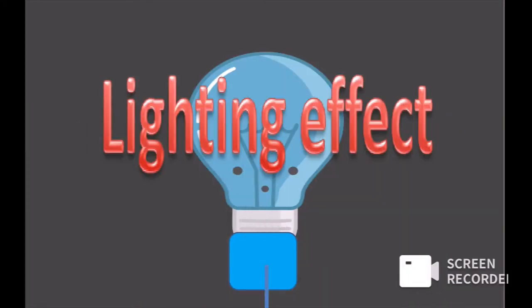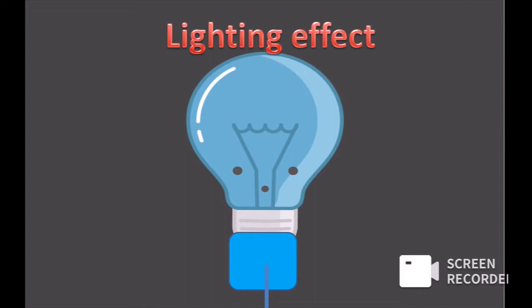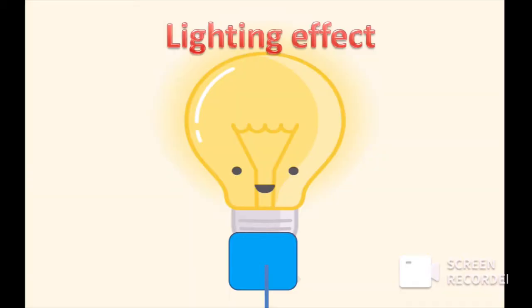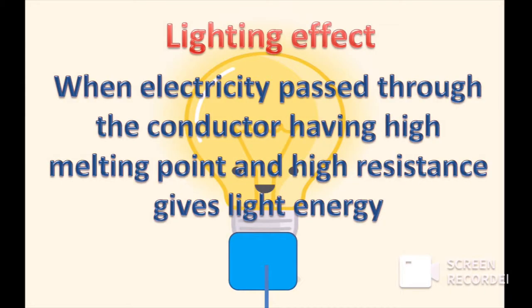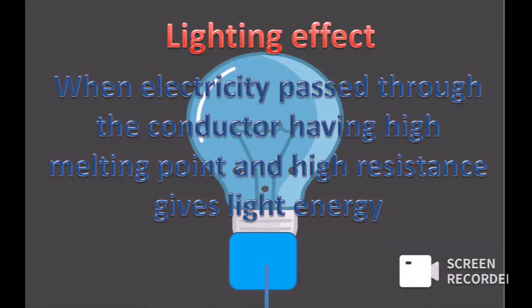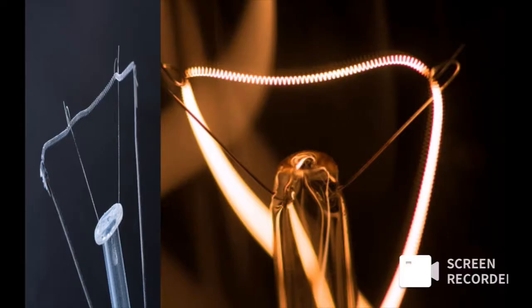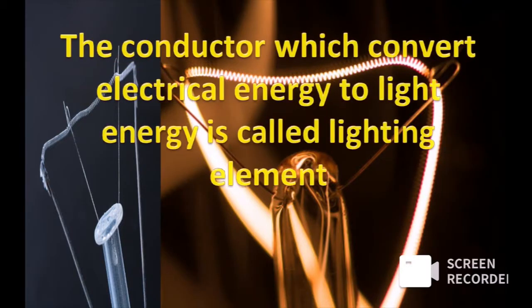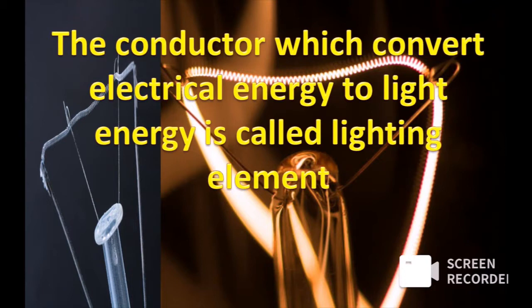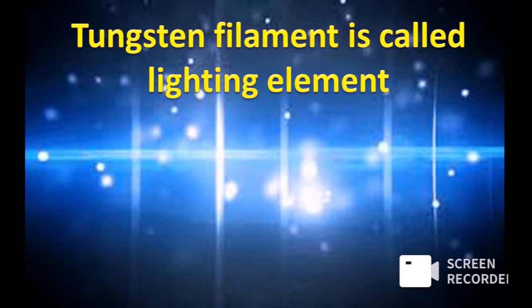Lighting effect of current: when electricity passes through a conductor having high melting point and high resistance, it gives light energy. The conductor which converts electrical energy to light energy is called a lighting element. Tungsten filament is called the lighting element, and it is used to convert electrical energy to light energy.